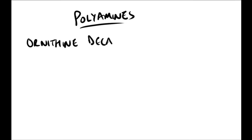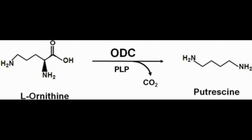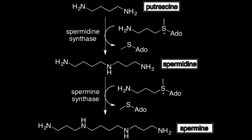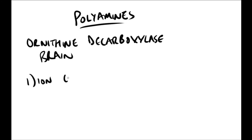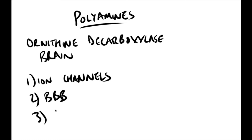We start with ornithine, which is part of the urea cycle. With ornithine decarboxylase, we lose carbon dioxide and get putrescine, which is the precursor to the polyamines. With the help of spermidine synthase you get spermidine, and with spermine synthase you get spermine. Some functions of polyamines include: modulators of ion channels, enhancement of blood-brain barrier permeability, and promotion of growth.